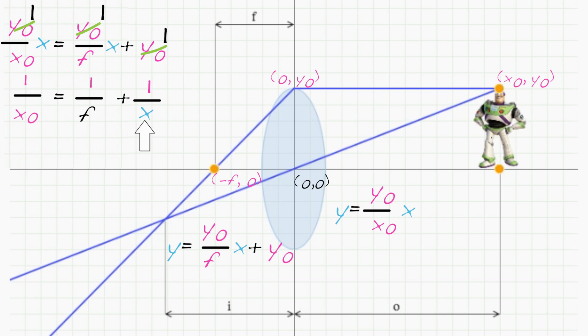Notice the x in this equation is the x coordinate where the lines intersect. According to our diagram, this happens when x equals minus i.